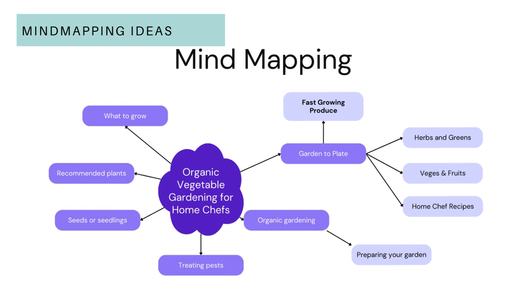So this is the topic, these are the chapters shown in light middle-colored purple, and these are the subtopics. Chapter one might be 'garden to plate,' and the subtitle might be 'fast growing produce' — what plants you should grow in your garden to have enough food to cook in your kitchen. I recommend you grow herbs and greens, vegetables and fruits, and different recipes for these ingredients. You take your main topic in the middle, these are the chapters and main subtopics, and then these are the things you're going to write about.